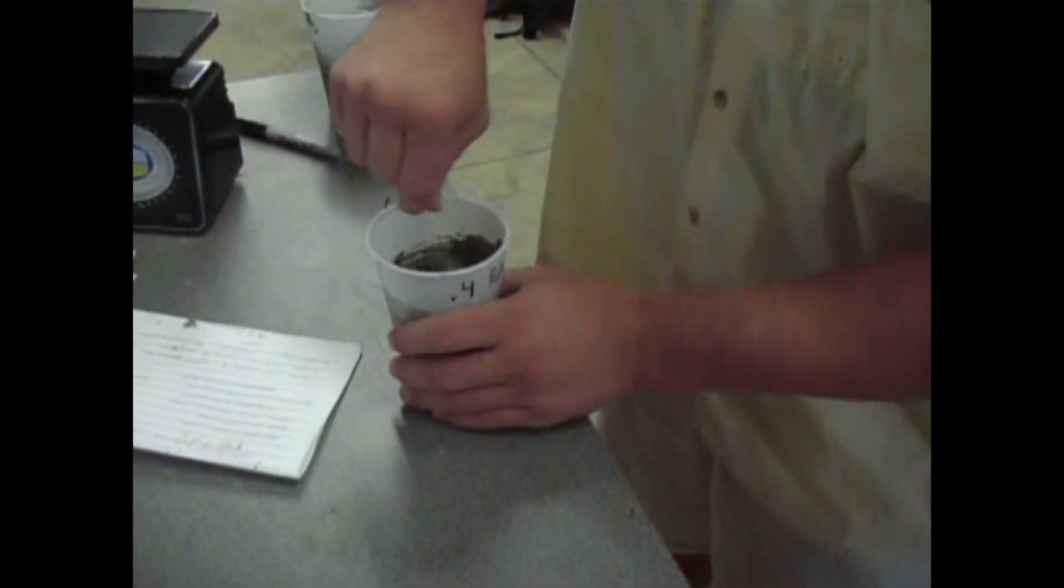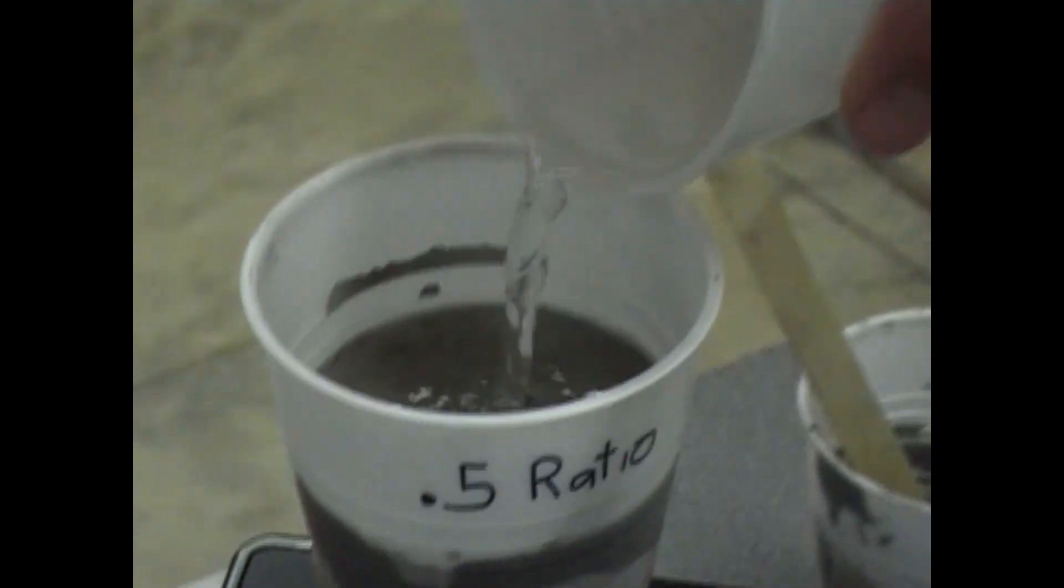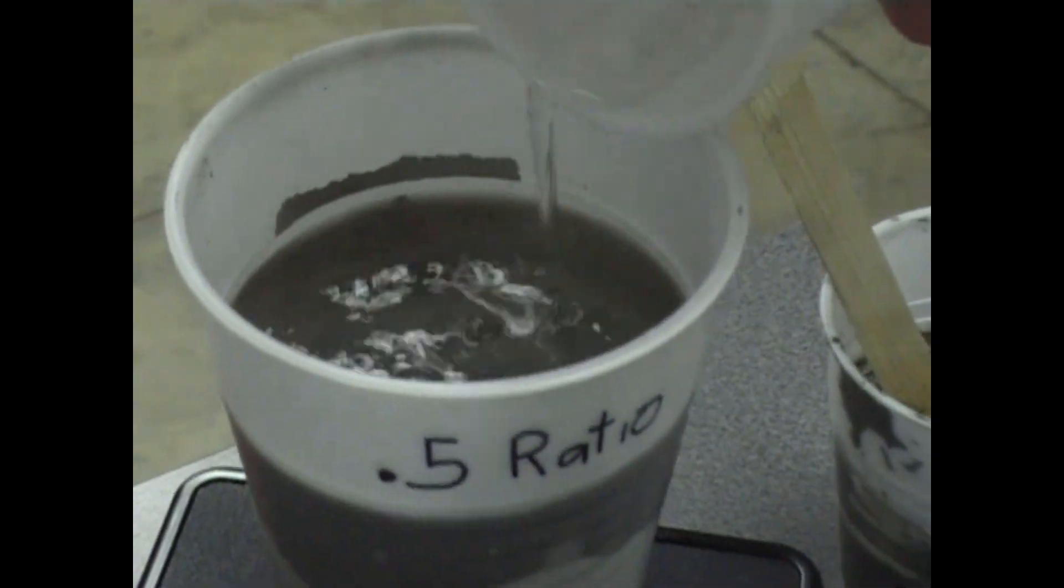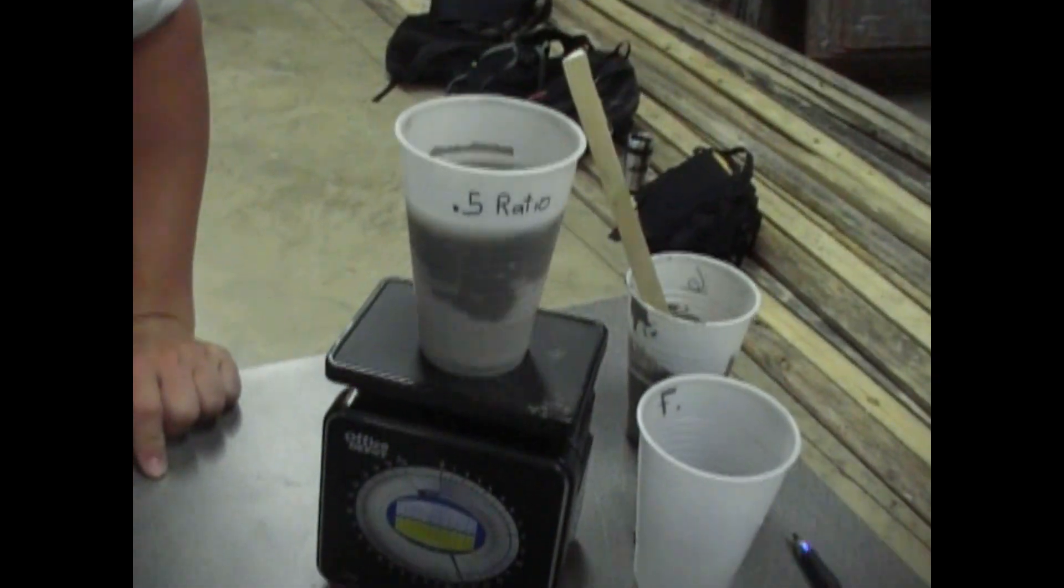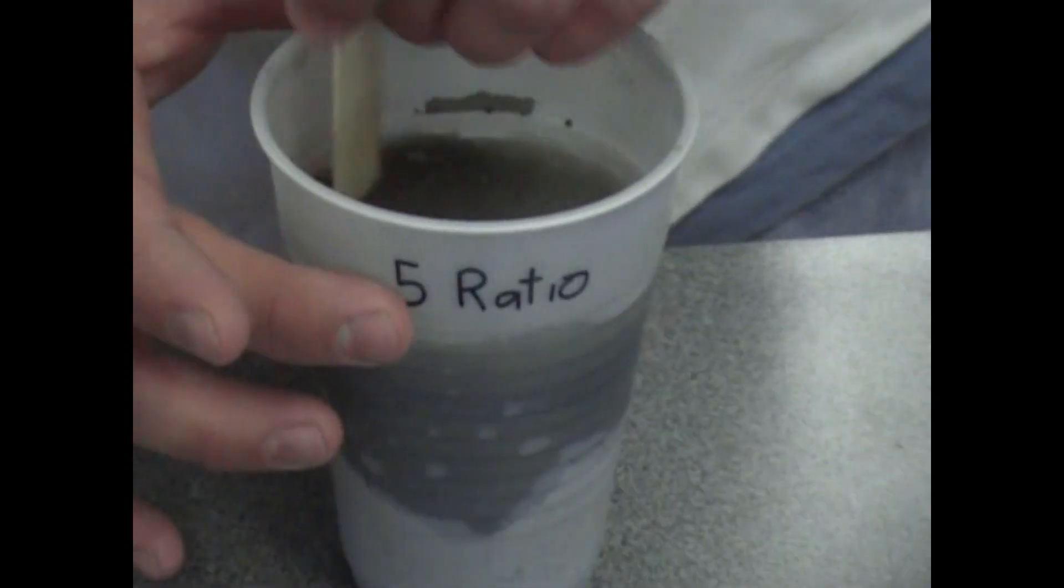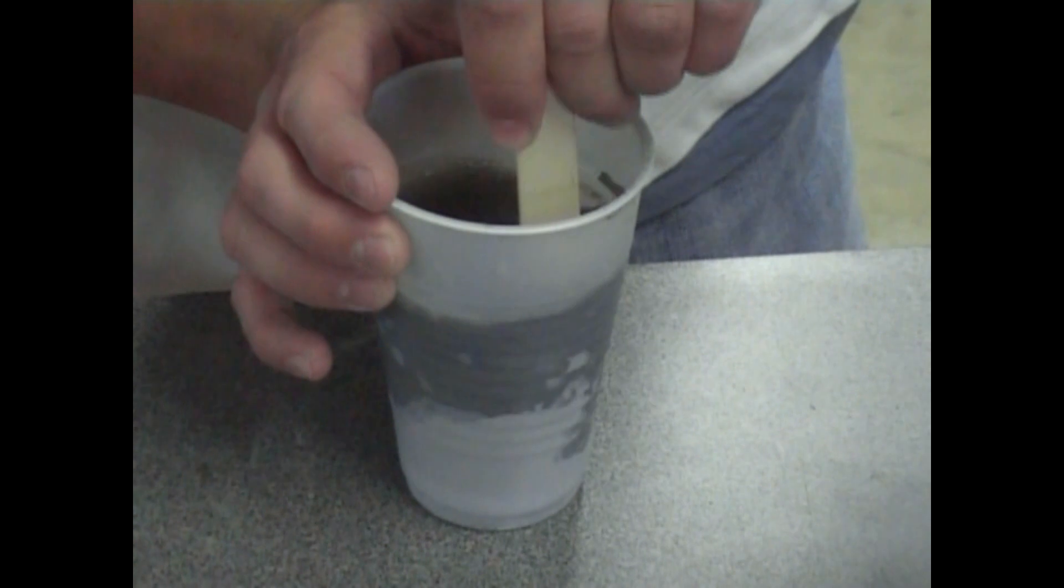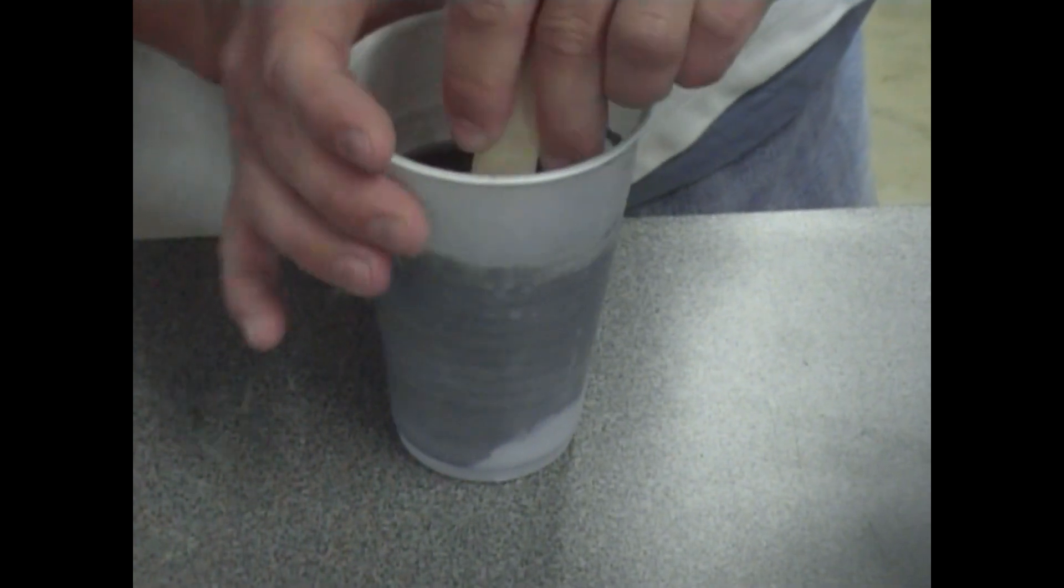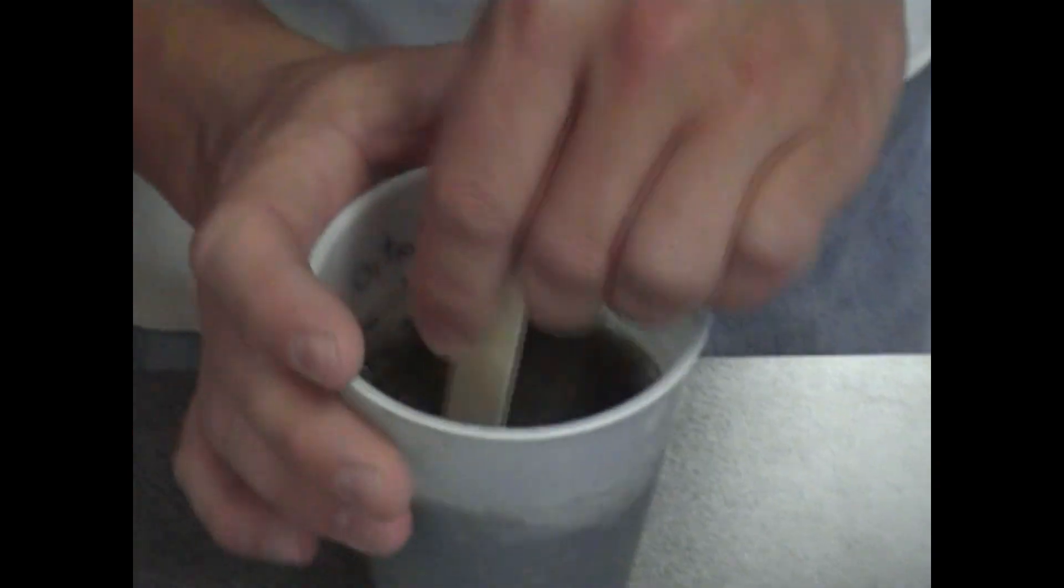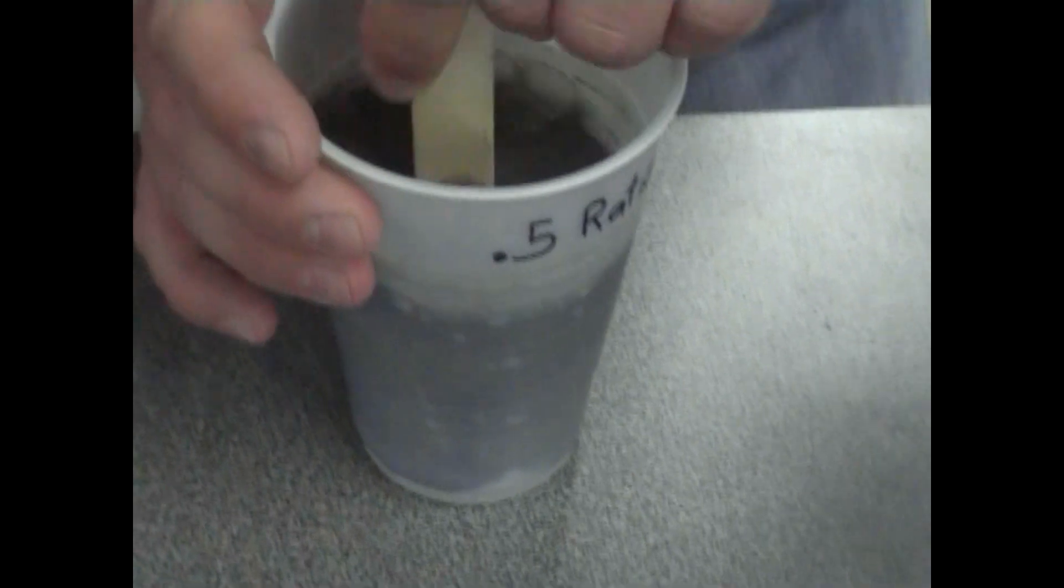Alright. Here's 0.5 ratio. 10 ounces of cement. 5 ounces of water. We need some more water. Stop. Alright. A little more.